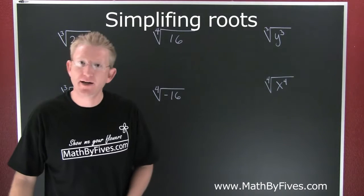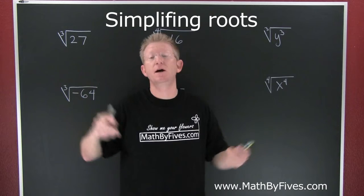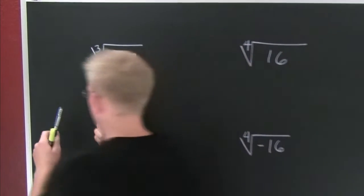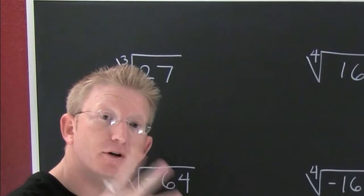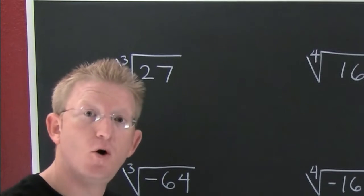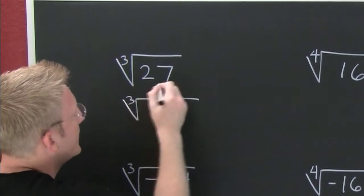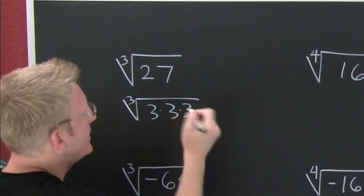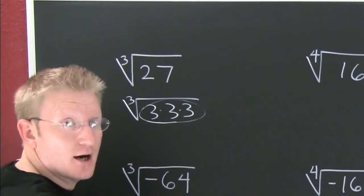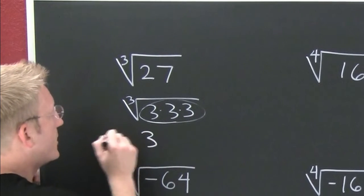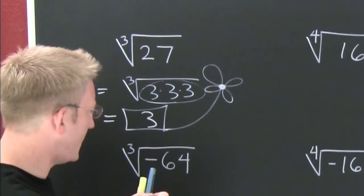Let's evaluate some roots — not square roots, but cube roots and fourth roots. Starting with the cube root of 27: you're looking for sets of three, or triples. For every triple, one factor gets to come out. 27 breaks down as three times three times three, so there are three copies of three, meaning one three comes out. The cube root of 27 is 3.